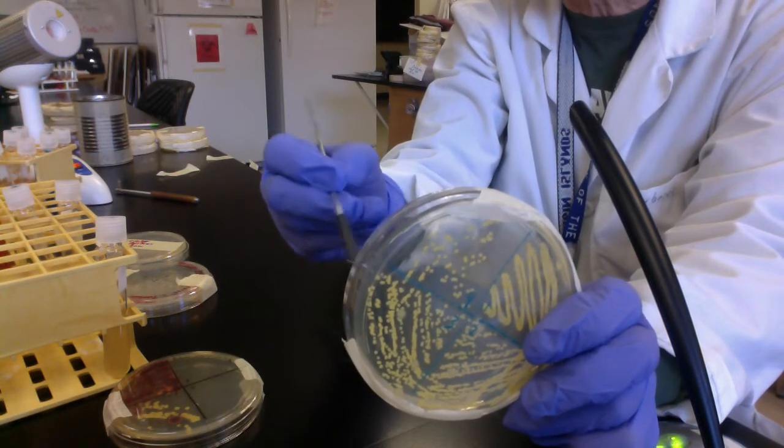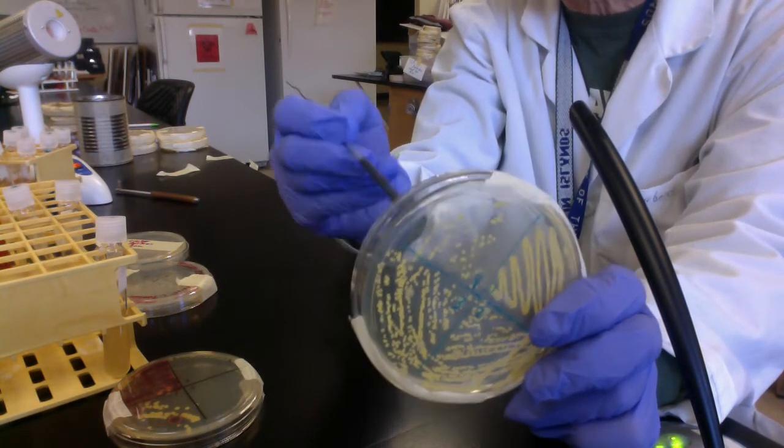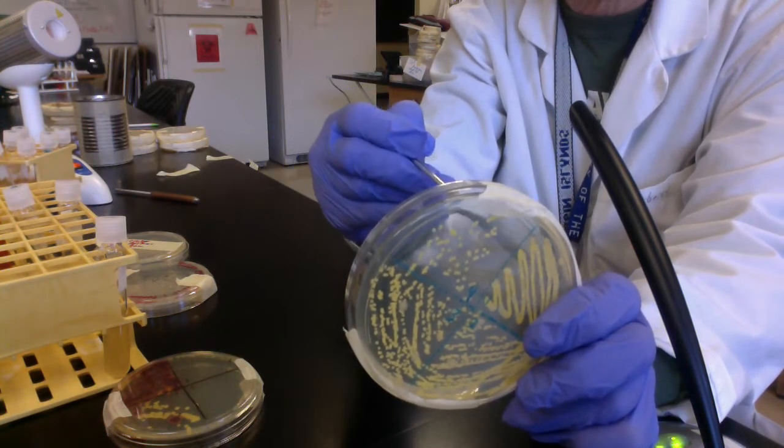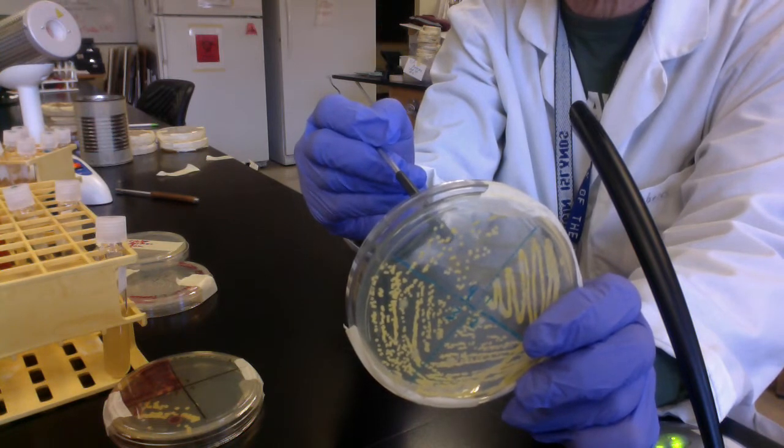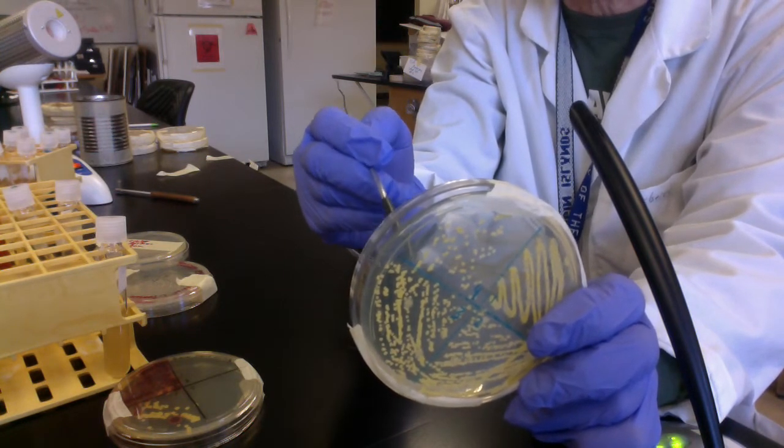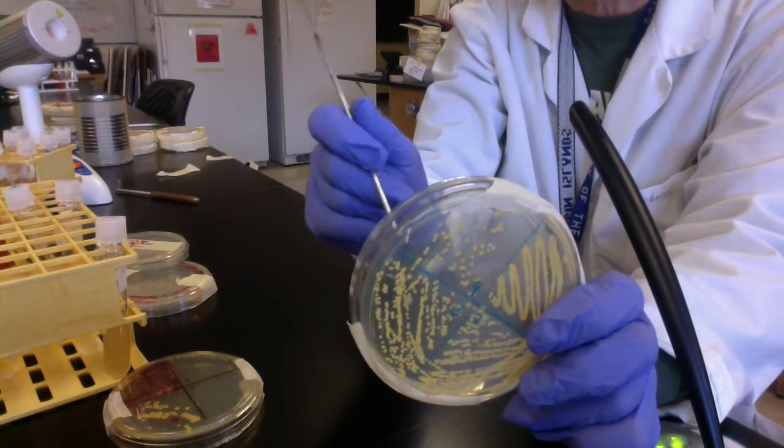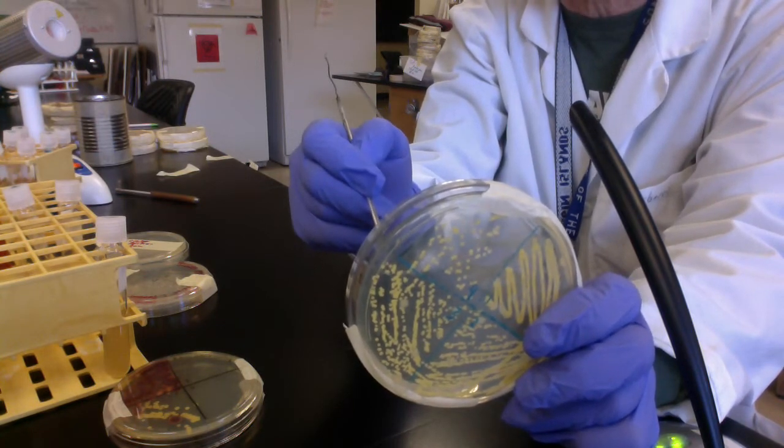For example, on the lab exam, always hold the plates up to the light and force yourself to look at all four quadrants before you determine if the culture is pure or mixed. Often your pathogen is hiding out in quadrants one, two, or three. So look at all four quadrants.